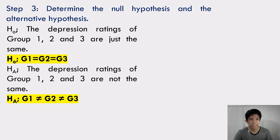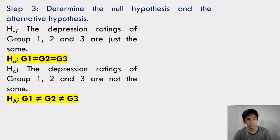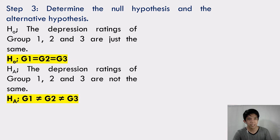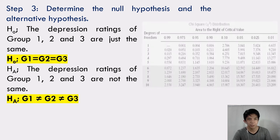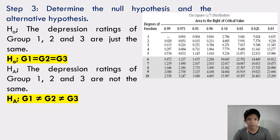Step 3: Determine the null hypothesis and the alternative hypothesis. Null hypothesis: the depression ratings of Group 1, 2, and 3 are just the same. Alternative hypothesis: the depression ratings of Group 1, 2, and 3 are not the same. Using the chi-square distribution table with a degree of freedom of 2 and an alpha level of 0.05, we get the critical value of 5.991.